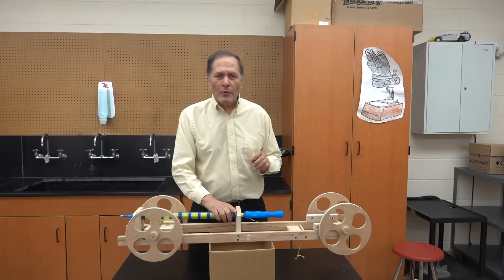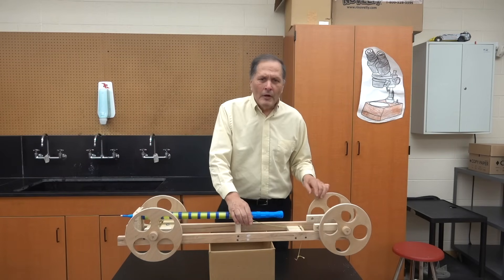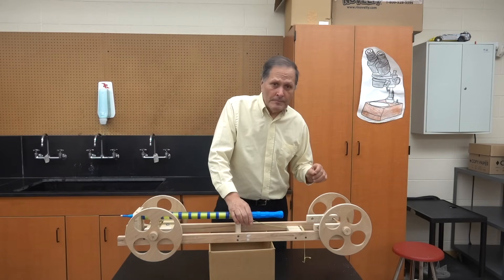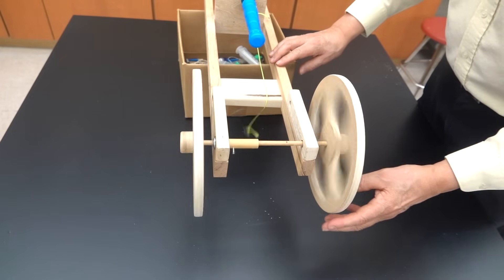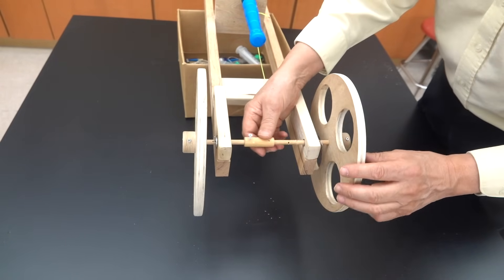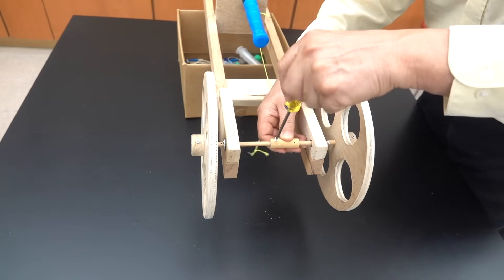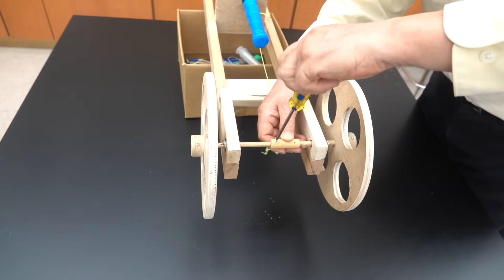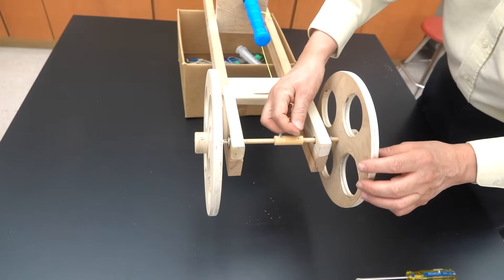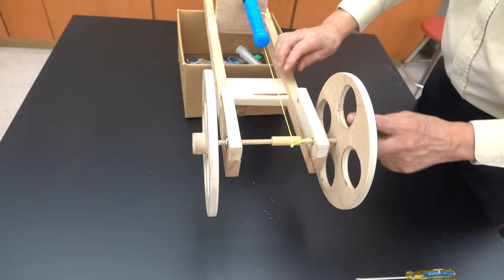So far we've been running this car with a string wrapped directly around the axle. Now I want to try a slight change to it. Currently the axle has a diameter of 5 16ths. I'm going to add a sleeve on it which is going to increase it to 10 16ths. We were looking at changing the mechanical advantage and wanted to see if this would improve its performance.